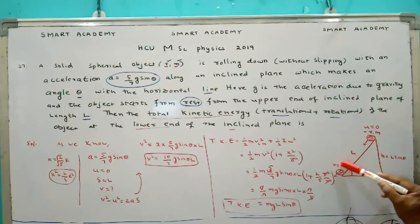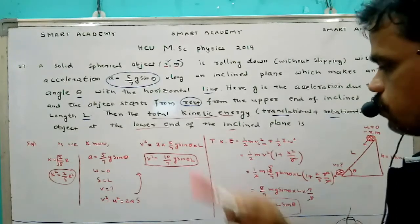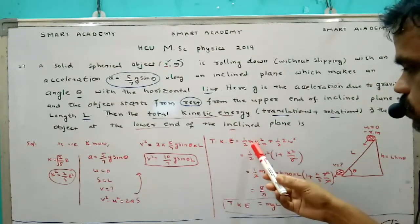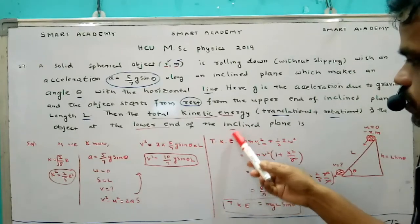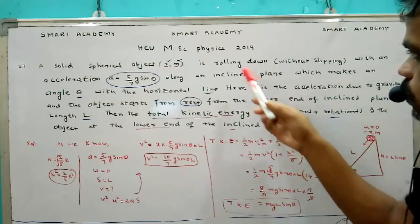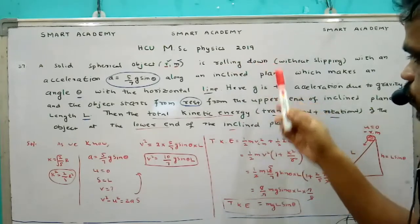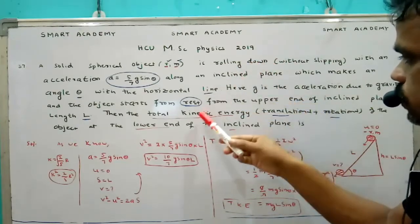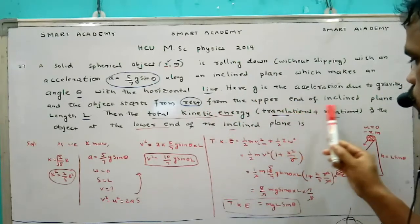So first we calculated final velocity of the object. Then go for total kinetic energy. Total kinetic energy is nothing but total kinetic energy of spherical object. It is in rolling motion.